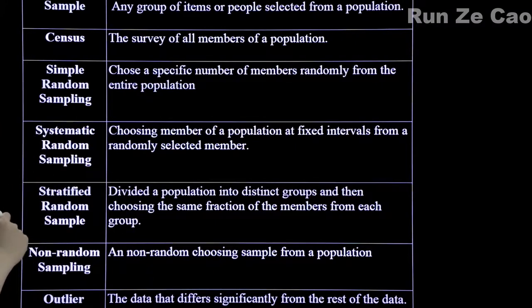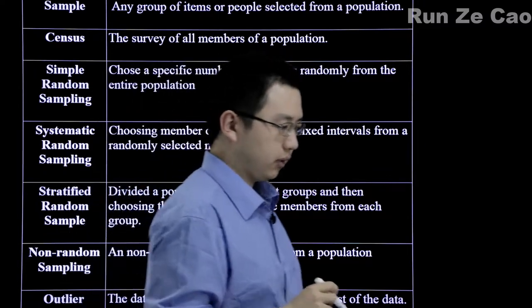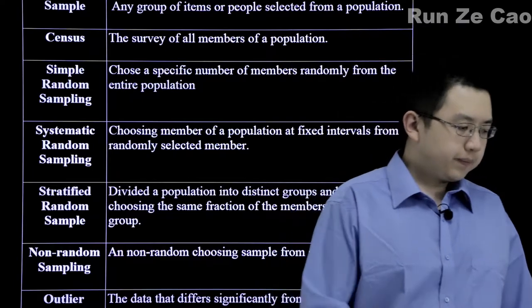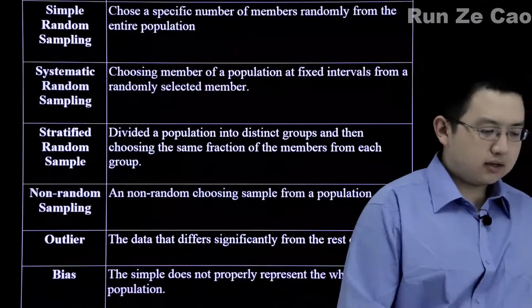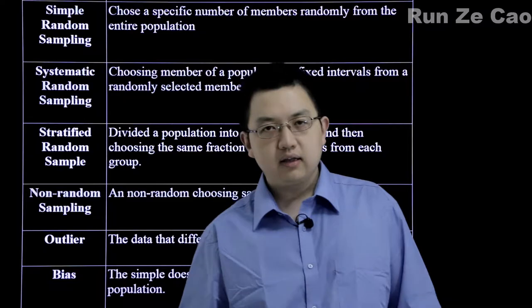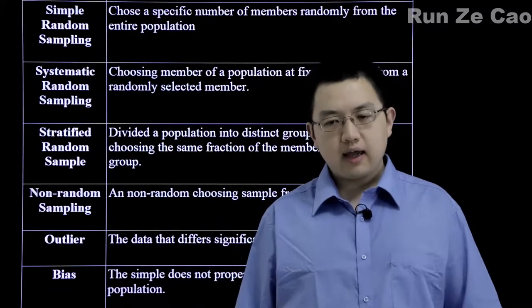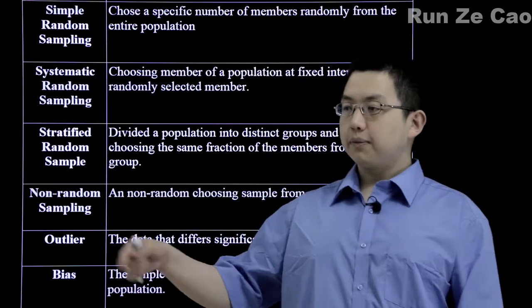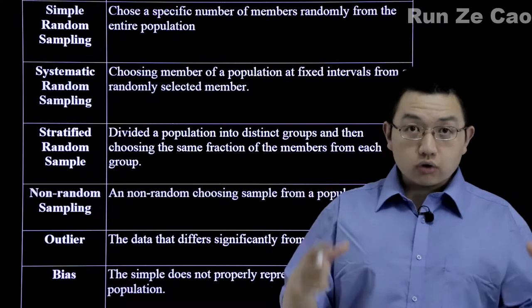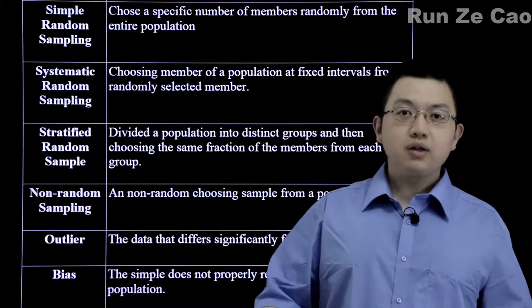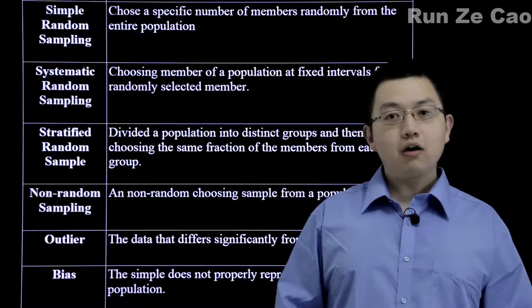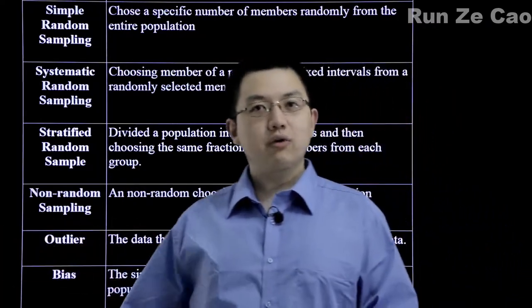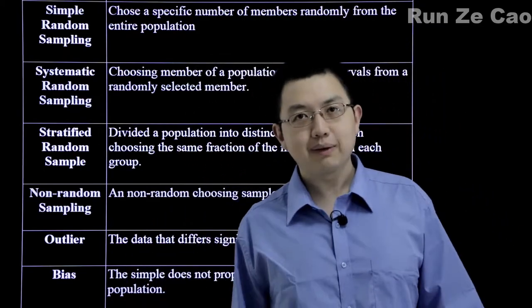Simple random sampling is what happens when you choose a specific number of members randomly from the entire population. Systematic random sampling is when you start with an nth person, then every however many afterward you take another person. Usually you pick your n within a fixed number k — say within the first ten people you choose one randomly, and then every tenth person afterward you choose.